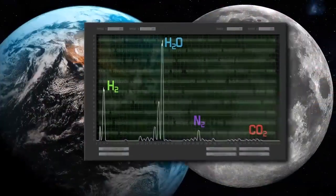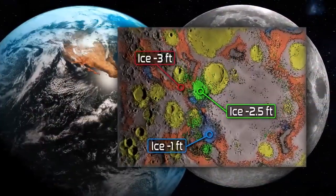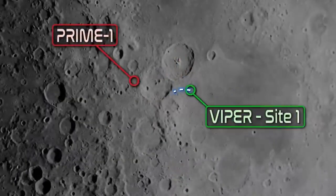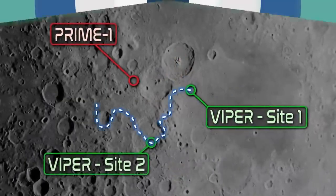The objective of PRIME 1 is to inform NASA's plans for mining resources on the lunar surface, as well as mission operations for a future NASA lunar rover mission called VIPR. So how will we extract water on the moon?